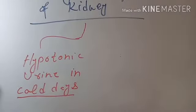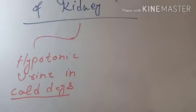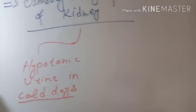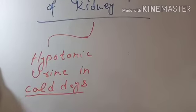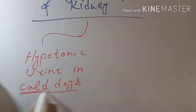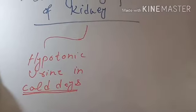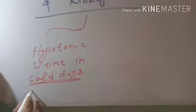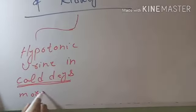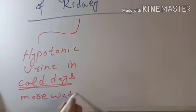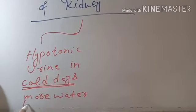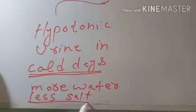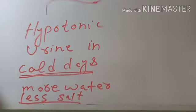So there is a need for extra water to be removed through urine. Hypotonic urine means the urine which contains more water though less salt. The urine which contains less salt will invariably contain more water.